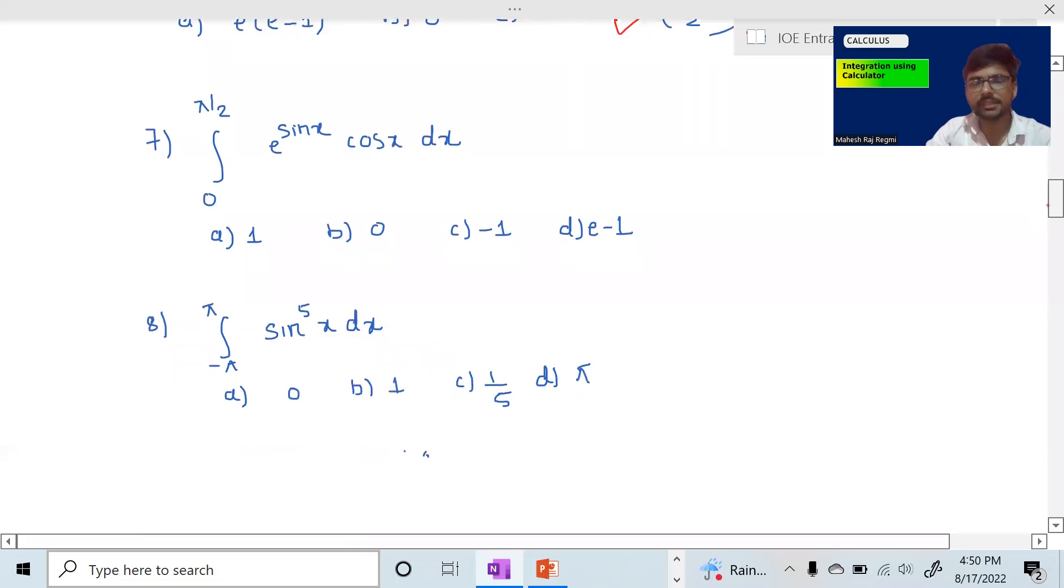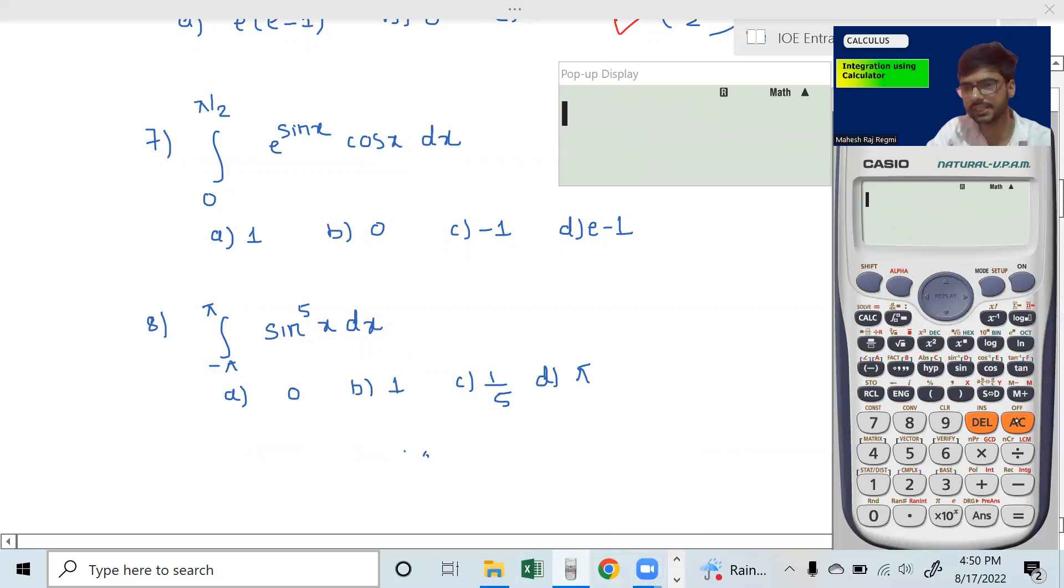In equation number 7, 1 power sin x times cos x. Shift LN gives 1 power sin alpha x times cos alpha x. From 0 to pi by 2. Calculator is in radian.